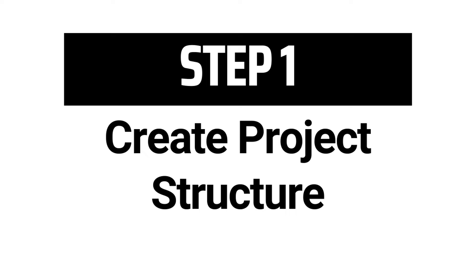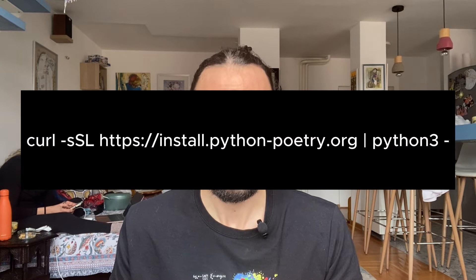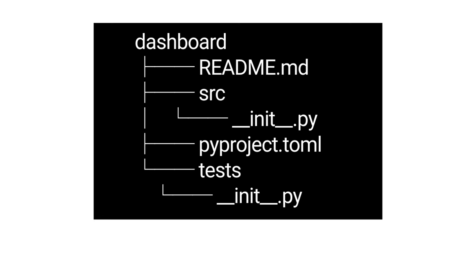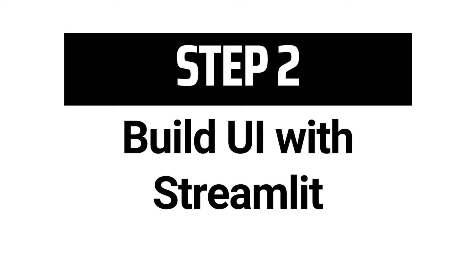Step one: create the project structure. We will use Python Poetry to create our project structure — you can install it for free with a one liner. Once installed, go to the command line and type 'poetry new' to generate the file structure. You cd into the folder you just created and run 'poetry install', which creates the virtual environment and also installs your local package source in editable mode.